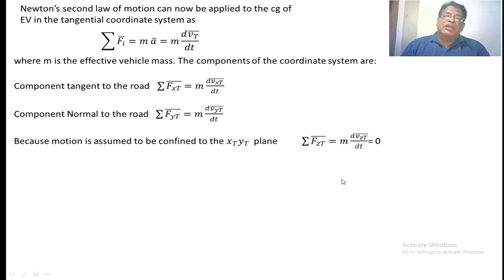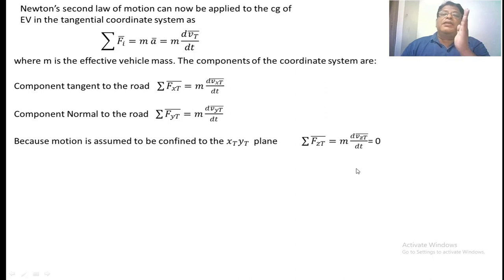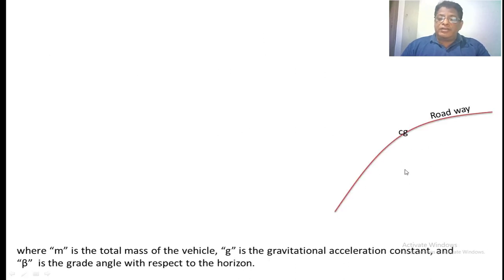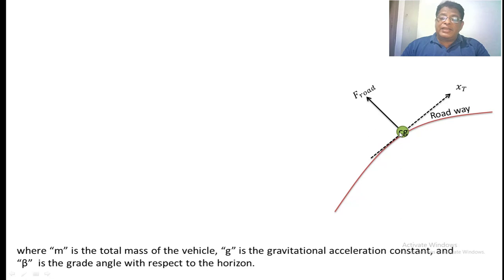There is no force acting on the z-axis because the vehicle's normal force acting upward is compensated by the gravitational force on the vehicle. On the roadway, we assume one vehicle is moving. This is the center of gravity, this is the tangential xt direction, and this is the road force F-road. When the vehicle is moving on the road, some amount of force acts on the vehicle due to the road — that is F-road.